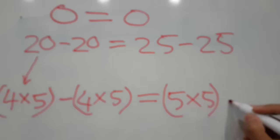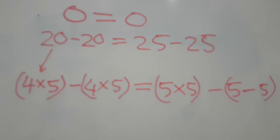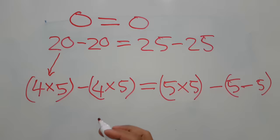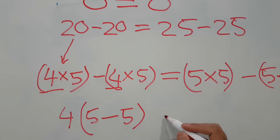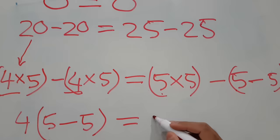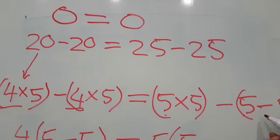The next 25 I can expand as 5 times 5. Now look at the left-hand side — you can see this 4, and this 4 is common, so I can take 4 as a common factor. The remaining terms are 5 minus 5. On the right-hand side, this 5 and this 5 are common, so I can take 5 as a common factor, giving 5 times 5 minus 5.